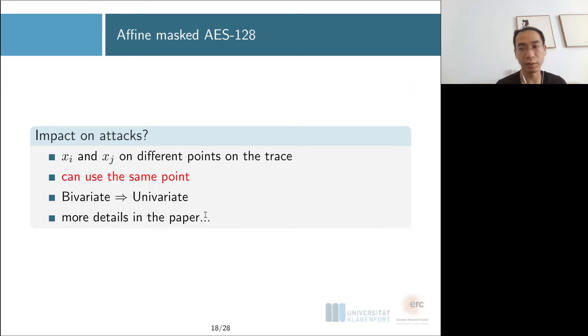Does it really have an impact on attacks? If you were looking for one leakage about Xi and one leakage of Xj, you were going to find two different samples on your power trace. But with this case, if Xi and Xj lie in exactly one word, you can just pick this point which automatically gives you both. This means for some second-order attacks you might be able to go from bivariate to univariate. The goal of this analysis is not really finding the most optimal attack but having a better understanding of the architecture.